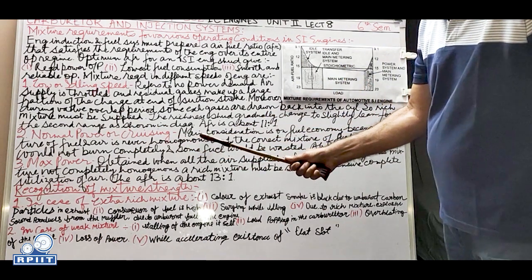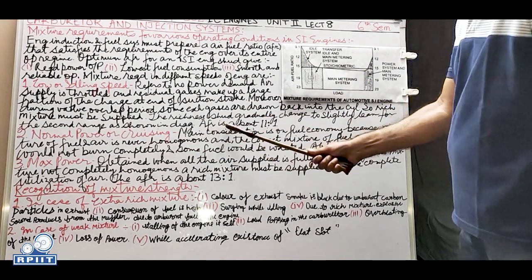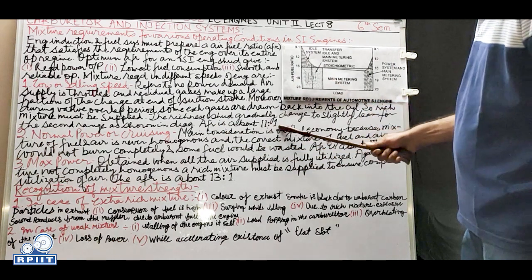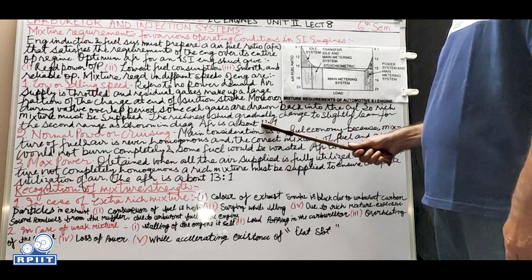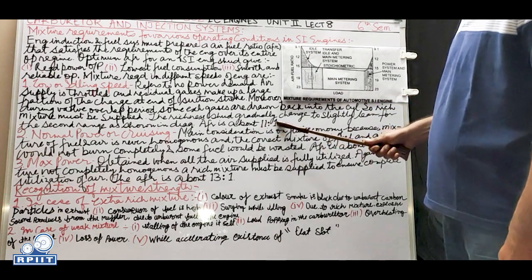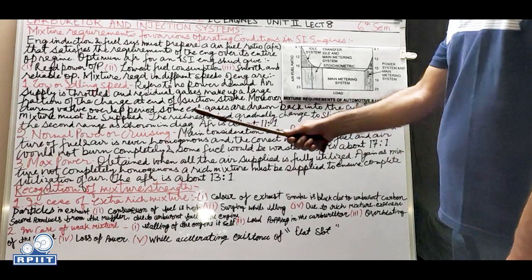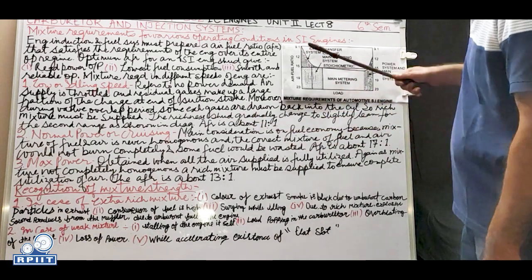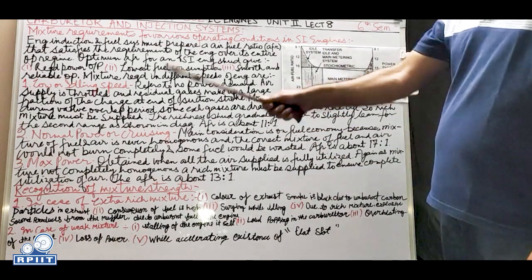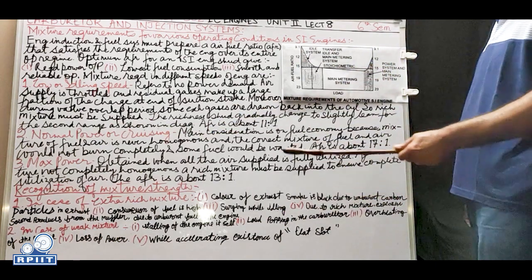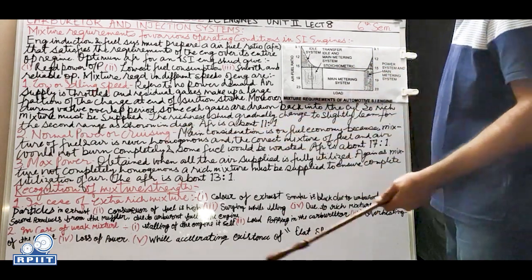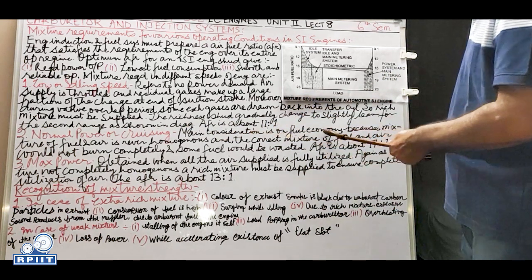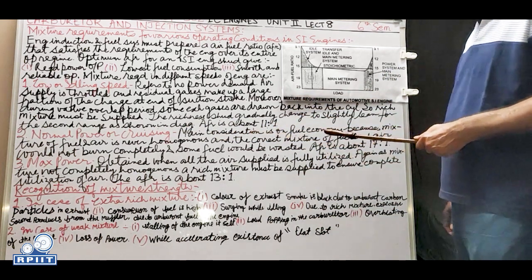For normal power or cruising at 50 to 60 km/h, the AFR is about 11:1 - eleven parts of air to one part of fuel. The richness gradually changes to slightly leaner for this second range. The main consideration during normal cruising is fuel economy - we want the maximum mileage from our vehicle.